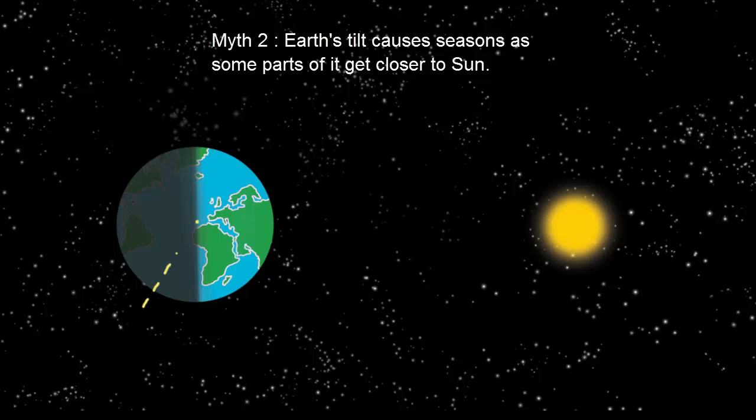The second response we got was that the tilt of the Earth leads to seasons because the part of the Earth that is tilted towards the sun is closer than the part that is tilted away.